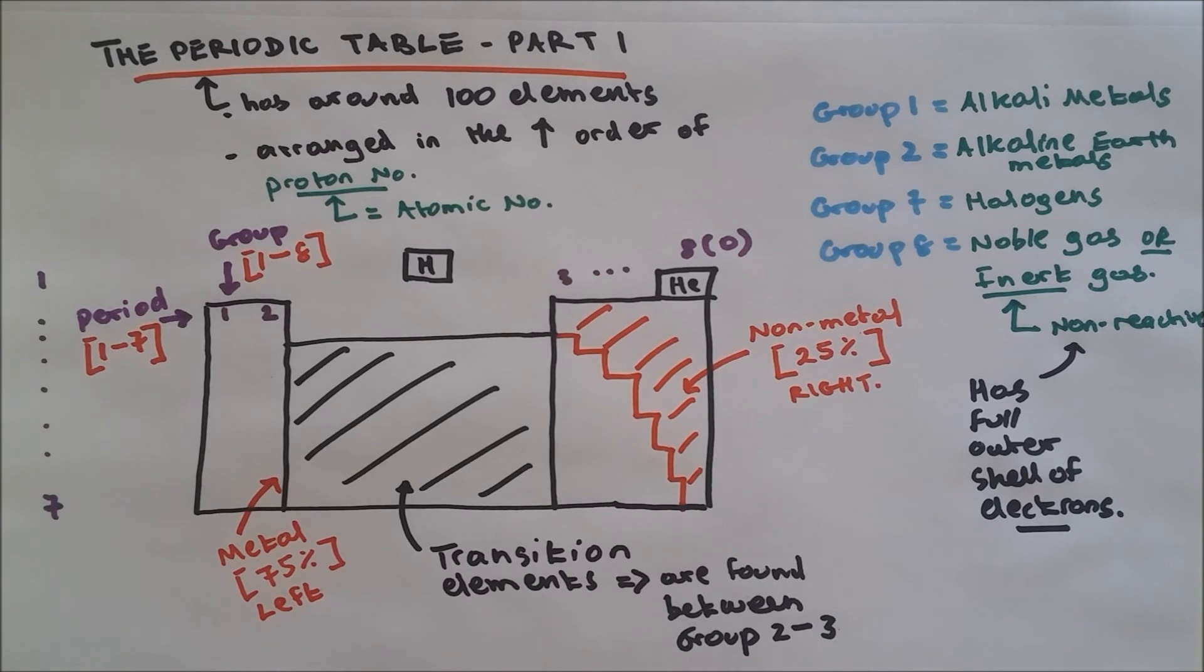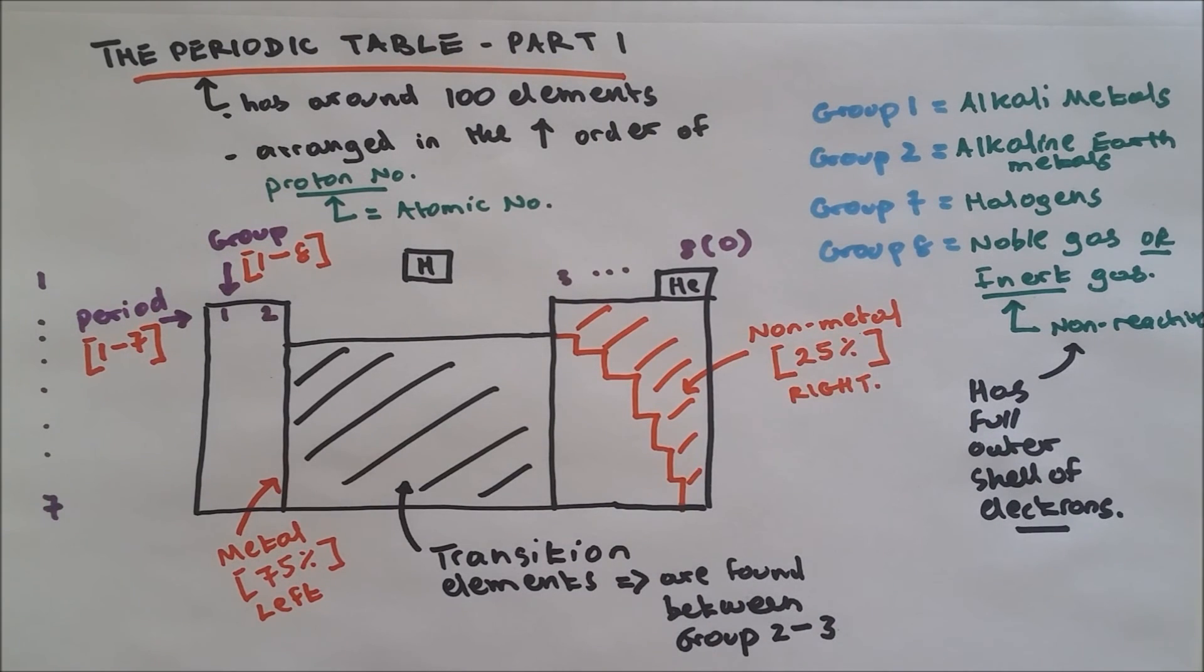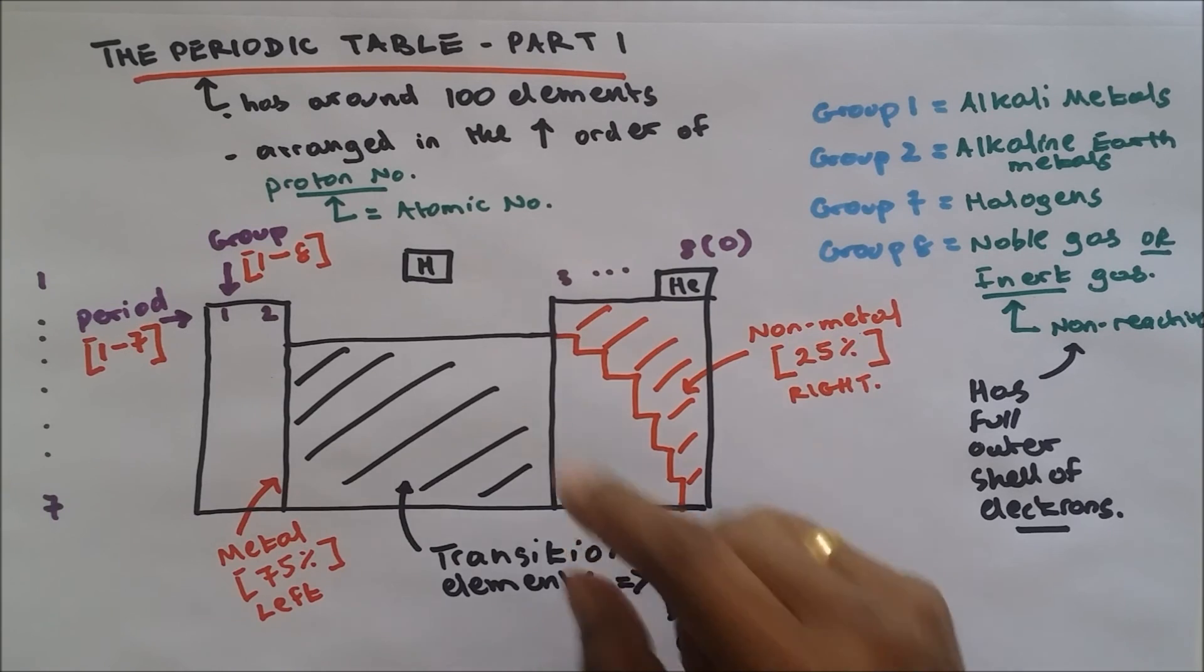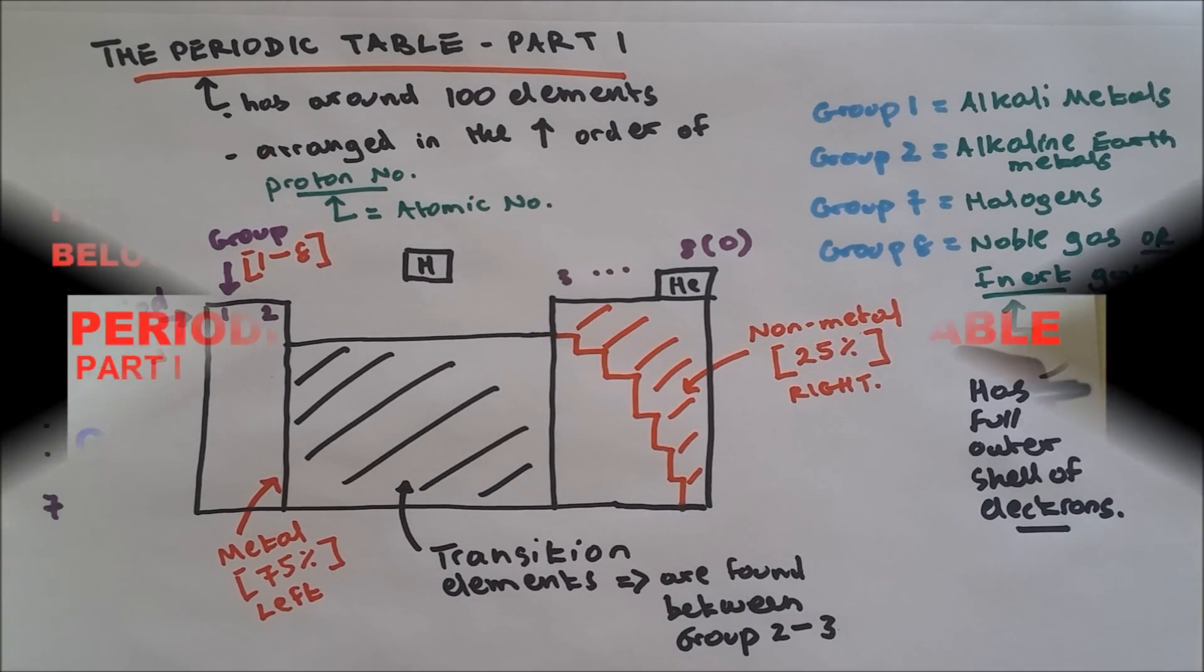Alright guys, that's all I'm going to teach you in this video. I'm going to do a second part of periodic table where I'm going to teach you more details. What does the group tell us and the period tell us, and I'm going to also explain the atomic number and the mass number. Thank you, please don't forget to subscribe.